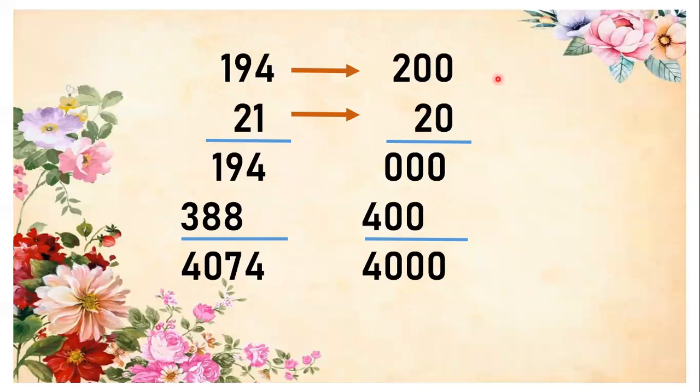Now if we are going to look for the estimated product, you have to round off first the multiplicand. Look at the highest place value here, which is in the hundreds. Assess the tens or the number on the right side of the number, if it is within 5, greater than 5, or below 5. Since 9 is greater than 5, you have to add 1 here and replace all the numbers by 0, so it becomes 200. For 21, the highest place value is tens. Look at the right side number, which is 1. 1 is below 5, so it becomes 20. You don't have to add 1 because the number next to it is less than 5.